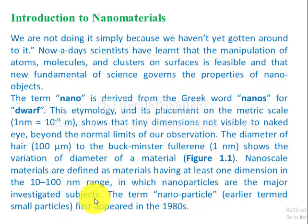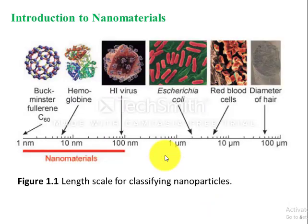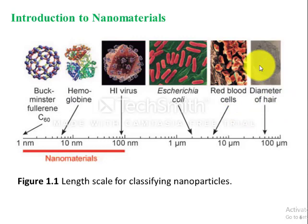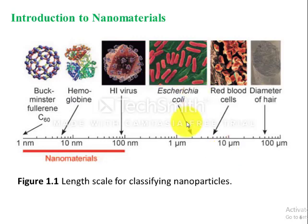The term nanoparticles first appeared in the 1980s. Figure 1.1 shows a length scale for classifying nanomaterials. On the right-hand side, we can see the diameter of a hair at 100 micrometers. Moving left, red blood cells are in the range of 10 micrometers. E. coli is 1 micrometer in size. Viruses are only 100 nanometers, and a molecule of hemoglobin is 10 nanometers in size.